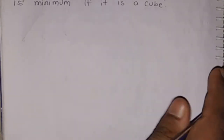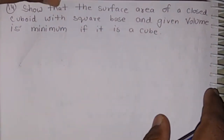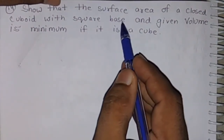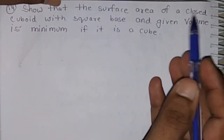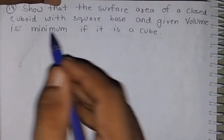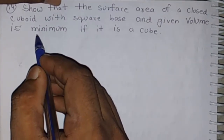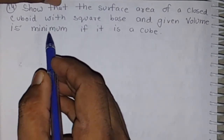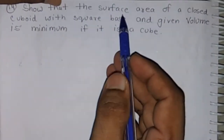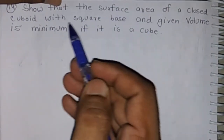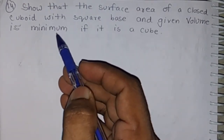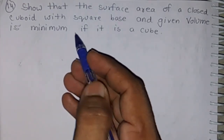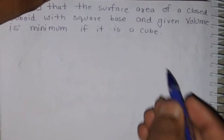Question number 14. We have to show that the surface area of a closed cuboid with square base and given volume — where volume is constant — is minimum when the cuboid is a cube.